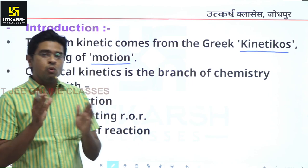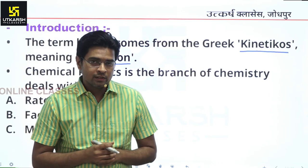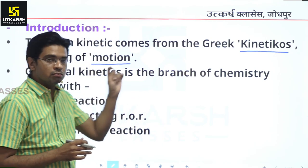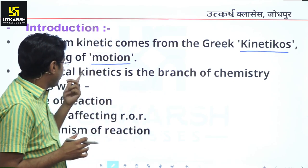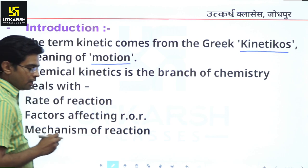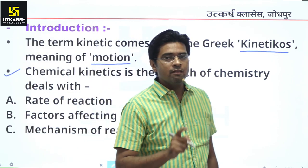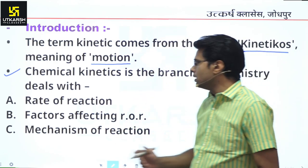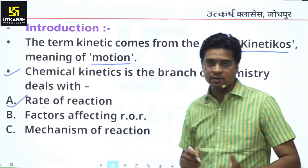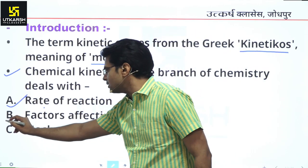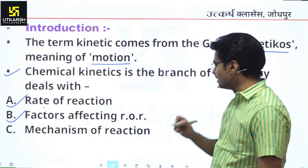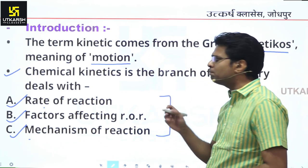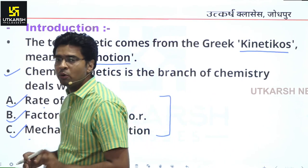It means it should be related with movement. As we know, there is no rate or speed possible without motion. So what we require in kinetics is movement or motion. Now, chemical kinetics is the branch of chemistry that deals with basically three things: the rate of reaction, factors affecting rate of reaction, and mechanism of reaction.